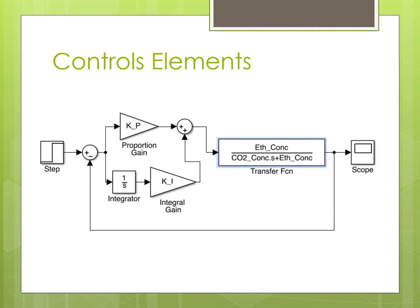Although the natural process is a positive feedback loop, most distributors use a PI controller for their control. This allows for variable gas input to the system while attempting to keep the concentration of the room a constant value. The inputs to the system are the concentration of ethylene and the concentration of carbon dioxide, while the output of the system is the concentration of ethylene, which is the desired controlled variable.